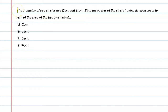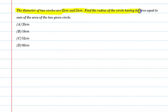Hello students, let's solve this question. The diameter of two circles are 32 centimeter and 24 centimeter. Find the radius of the circle having its area equal to the sum of the areas of two given circles.